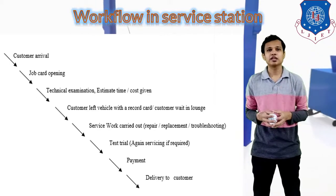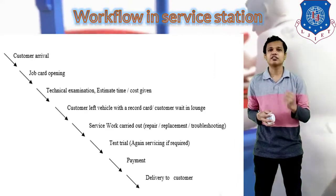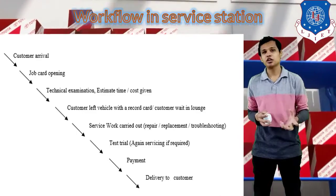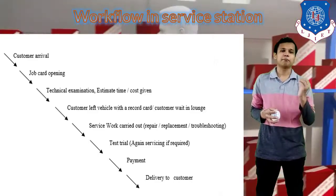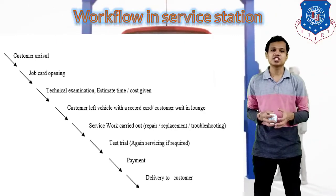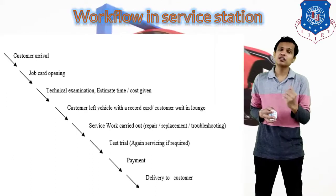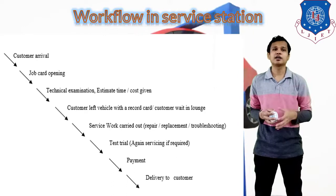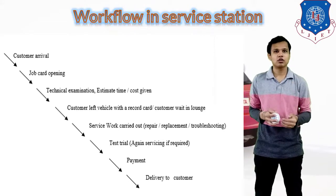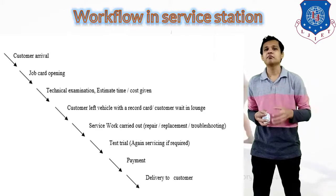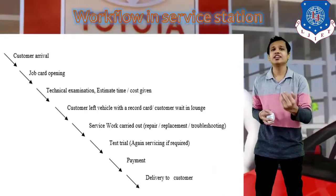Generally, many vehicle service centers also provide a lounge for waiting customers. After that, the service will be carried out — the repairing will be done, troubleshooting of different operation problems will be completed, and if any parts need to be replaced, the replacement will be done. After completing the repair procedure, a test trial will be done once again, and if there is still any problem, the service will be repeated. If the vehicle is 100% proper after the trial, the customer will make the payment, and then the delivery of the vehicle will be given to the customer.